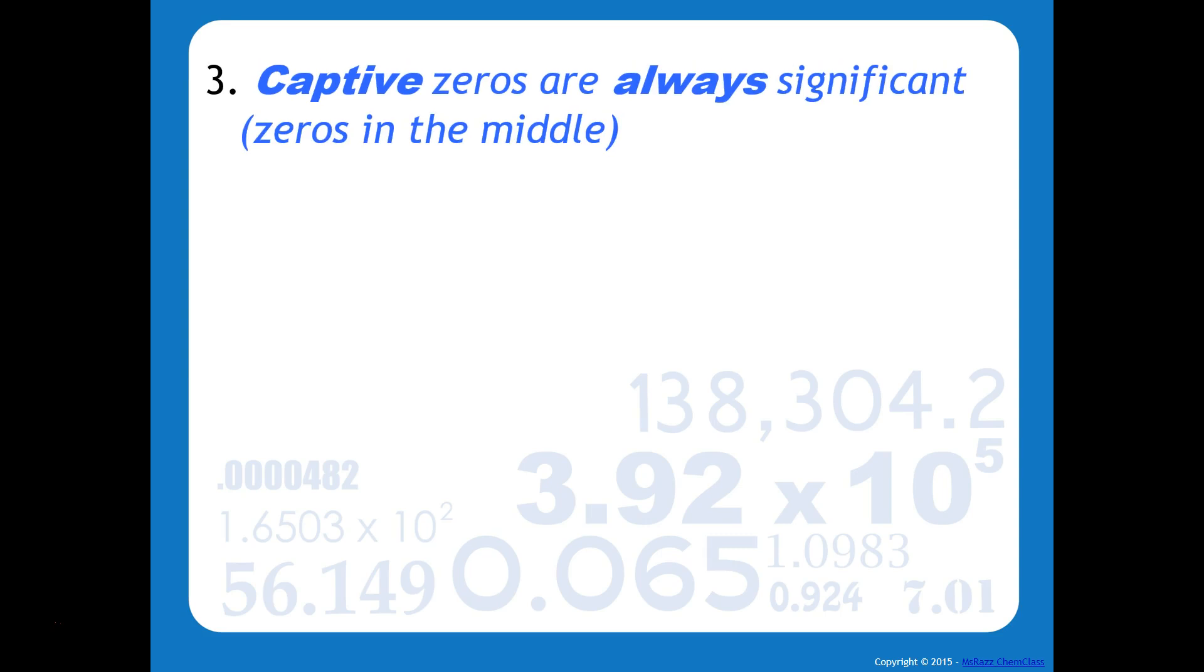Captive zeros, these are zeros in the middle, are always significant. For example, 205, all of the numbers would be considered significant.